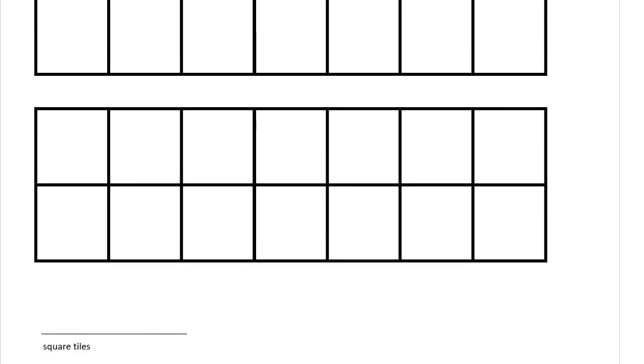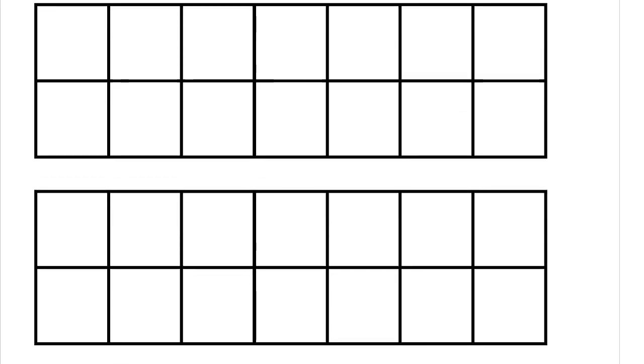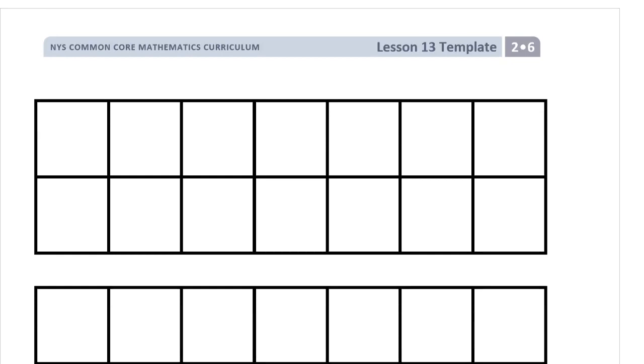So you've got 1, 2, 3, 4, 5, 6, 7. You've got 14. That's 6 rows of 7.